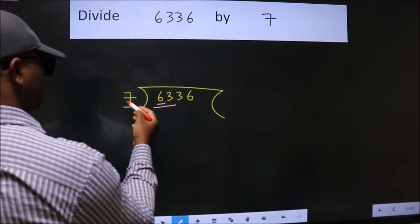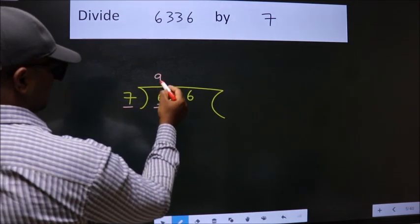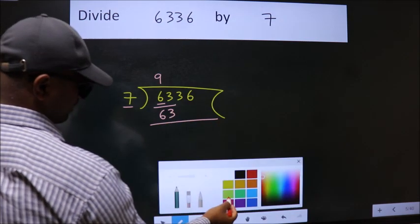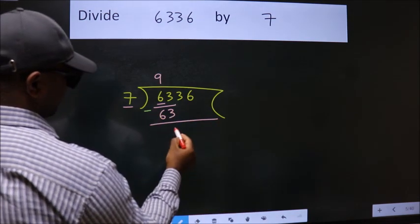When do we get 63 in the 7 table? 7 nines, 63. Now we should subtract. We get 0.